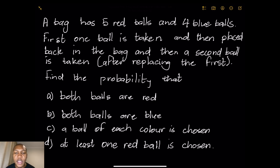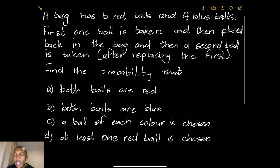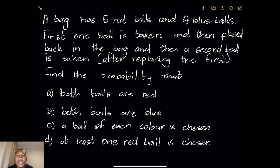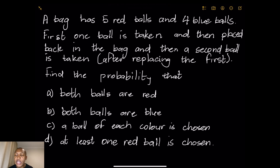Now let's have a look at the scenario. We've looked at a previous scenario where we had a bag and we were not replacing the ball afterwards — in that case it was a dependent event. In this case we're looking at independent events. A bag has five red balls and four blue balls. The first ball is taken and then placed back, and then a second ball is taken. We are going to draw a tree diagram for this scenario.